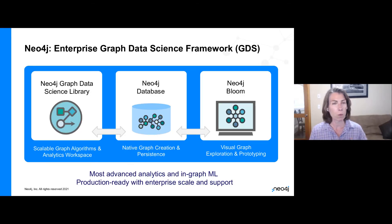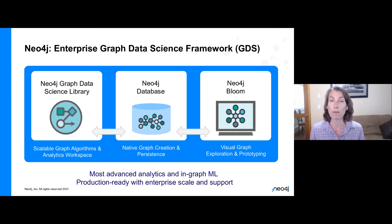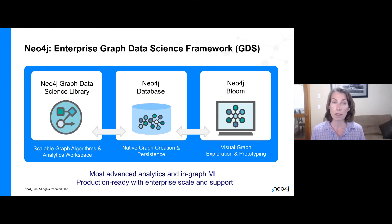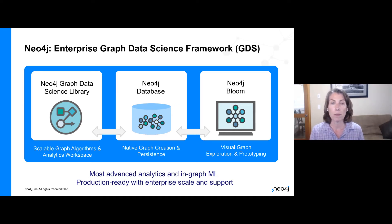Neo4j has put together a graph data science framework. It starts with a Neo4j database, because you need to get your graph from somewhere and store your results somewhere. Doing it in a native graph database makes queries very quick and allows persistence. The Neo4j Graph Data Science library is where you have the analytics workspace — we do automatic transformation into that format between storage and workspace. We have a very scalable, robust analytics workspace with graph algorithms and some of the most advanced graph machine learning in the GDS library. We also provide Neo4j Bloom so you can visually understand your graph, collaborate, and prototype solutions.